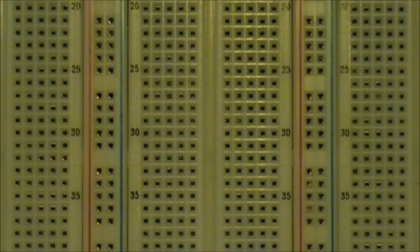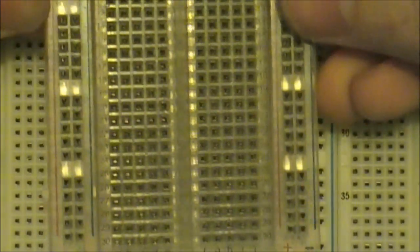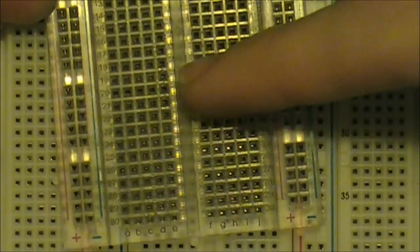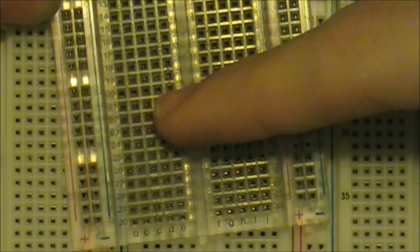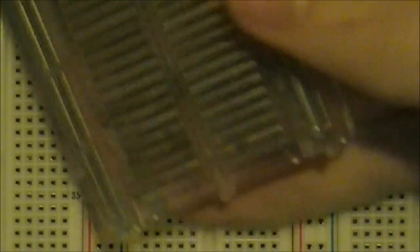Before we build our circuit, let me explain how the breadboard works. Here is an example of a breadboard that I ripped the adhesive backing off of. Each of these five holes in a row is connected, as you can see on the back. They are all connected there. And these, which are buses, are all connected as well.